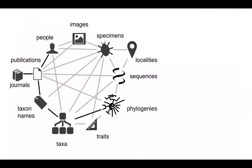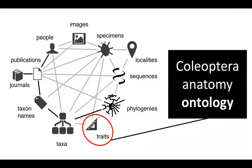Going back to our biodiversity knowledge graph, we can argue that one of the weakest links, at least for entomology and perhaps for most invertebrates, is our ability to process information about traits, and more specifically phenotypic traits. So here is where the Coleoptera Anatomy Ontology Project comes into play.